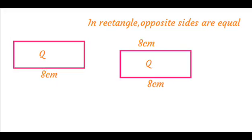In a rectangle, opposite sides are equal. So we have 8 cm on the opposite side also.